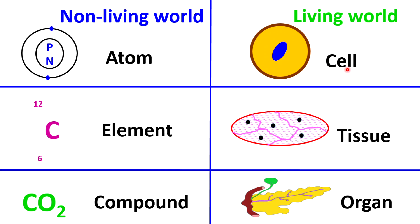We already know that cells make up tissues and tissues make up organs. In a similar way, in the non-living world, atoms make up elements and elements make up compounds. So if I think about it, atoms are the smallest particle that exists in the non-living world, comparing to the cell which is the smallest particle in the living world. Atoms make up elements which is much more complex, and elements will make up compounds that is even more complex. So what I'm going to do now is define each of these substances, and then we'll get into some examples.